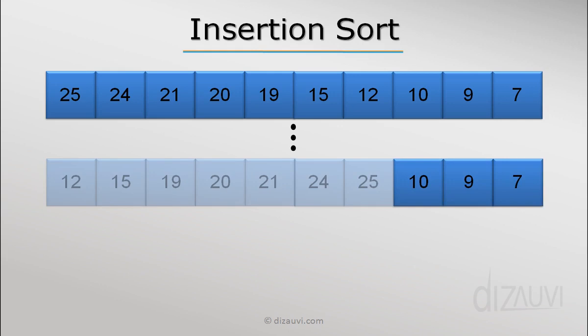The left part of the array is sorted, and now we come to the element 10 which will get inserted here in the sorted part. To make space for this element, all these elements will have to move to the right.